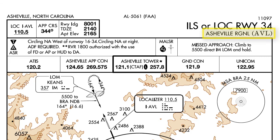Next we have the name of the airport — in this case Asheville Regional. This is the name of the airport itself, not of the city or state that the airport is located in. You can see the city and state are in the upper left corner. The airport name is important if you're calling on CTAF or making your call to tower. In this case it would be Asheville Regional, not just Asheville.